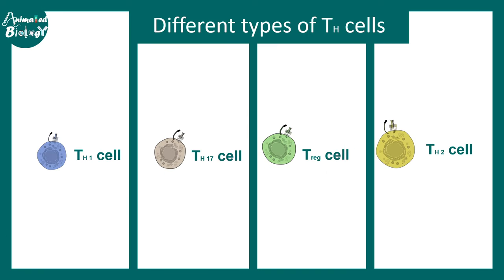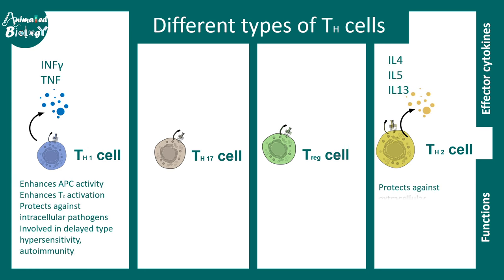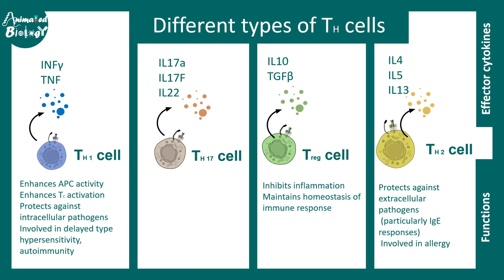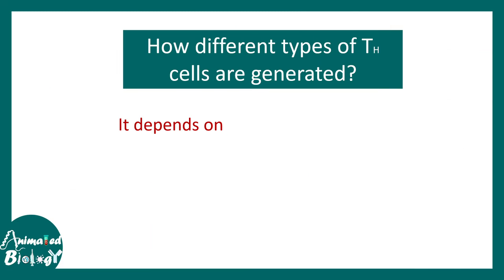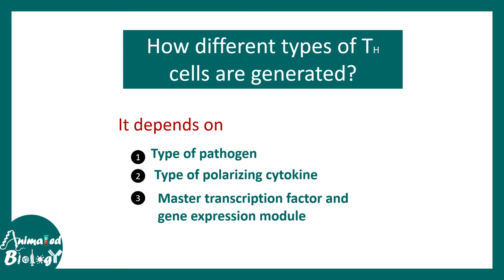Different T helper cell subtypes secrete different interleukins. TH1 secretes interferon gamma and TNFs. TH2 secretes IL4, IL5, and IL13. T regulatory cells secrete anti-inflammatory IL10 and TGF-beta. TH17 cells secrete IL17A, which is inflammatory and implicated in diseases like multiple sclerosis. The type of T helper cell generated depends on interleukin stimulation, pathogen context, and transcription factor networks.